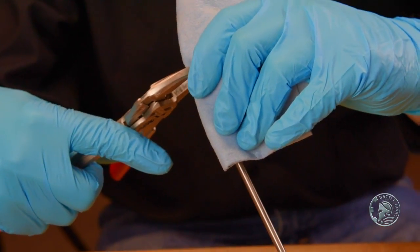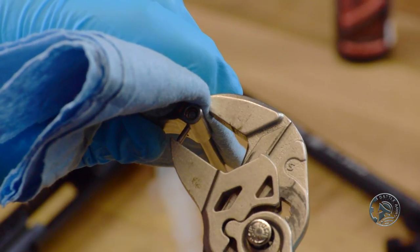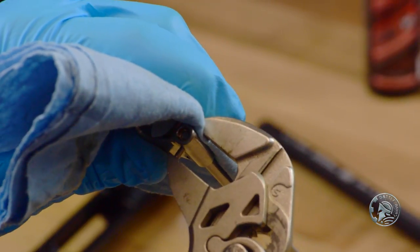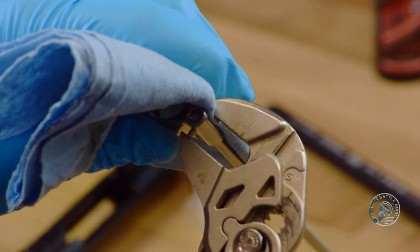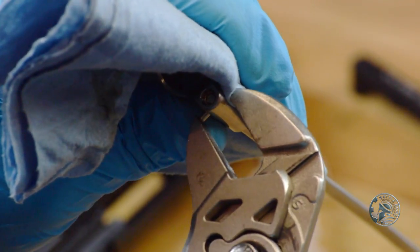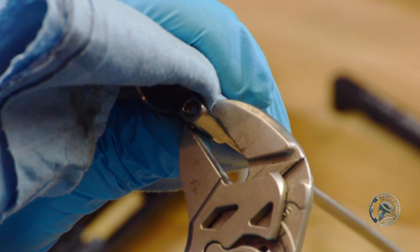Take the parallel jaw pliers and we're going to slowly begin to compress. This is going to drive the pin from one side to the other. You'll need to make an adjustment on the pliers as we do it. Just go very slowly.